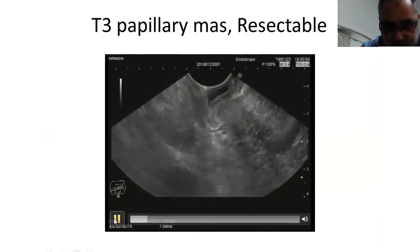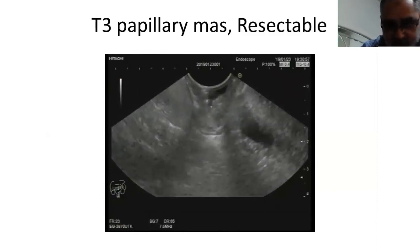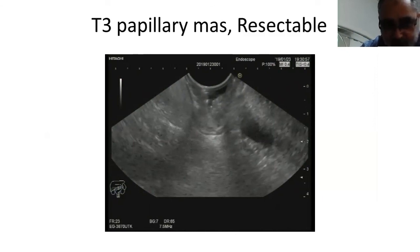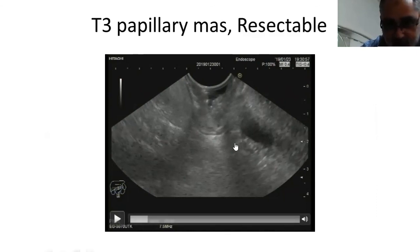The TNM staging of the papillary mass: T1 is restricted to the innermost three layers of the duodenal wall — mucosa, muscularis mucosa, and submucosa. T2 extends into the muscularis propria. T3 extends to the pancreas for less than two centimeters with preserved major vessels. T4 involves extension into the pancreas more than two centimeters or involving one of the major vessels. So this mass is not a candidate for endoscopic ampullectomy because it is not respecting the muscularis propria layer — it is for surgical resection. Thanks for your attention.